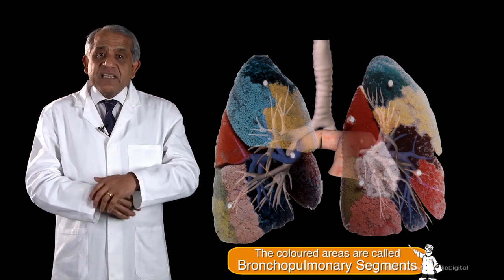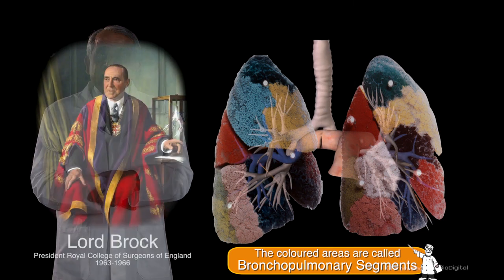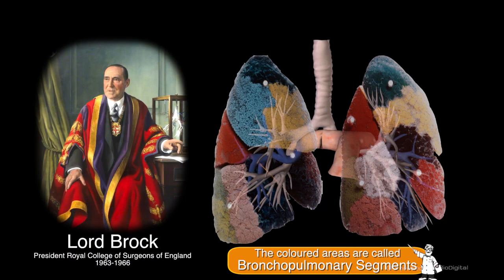We didn't know about this until the 1940s or 50s, and a great thoracic surgeon in London was one of the persons responsible for discovering this anatomy, and overnight it changed the practice of pulmonary surgery. No longer was it necessary to remove the entire lobe just because a small part of the lung was infected — you could get away with removing just a bronchopulmonary segment.